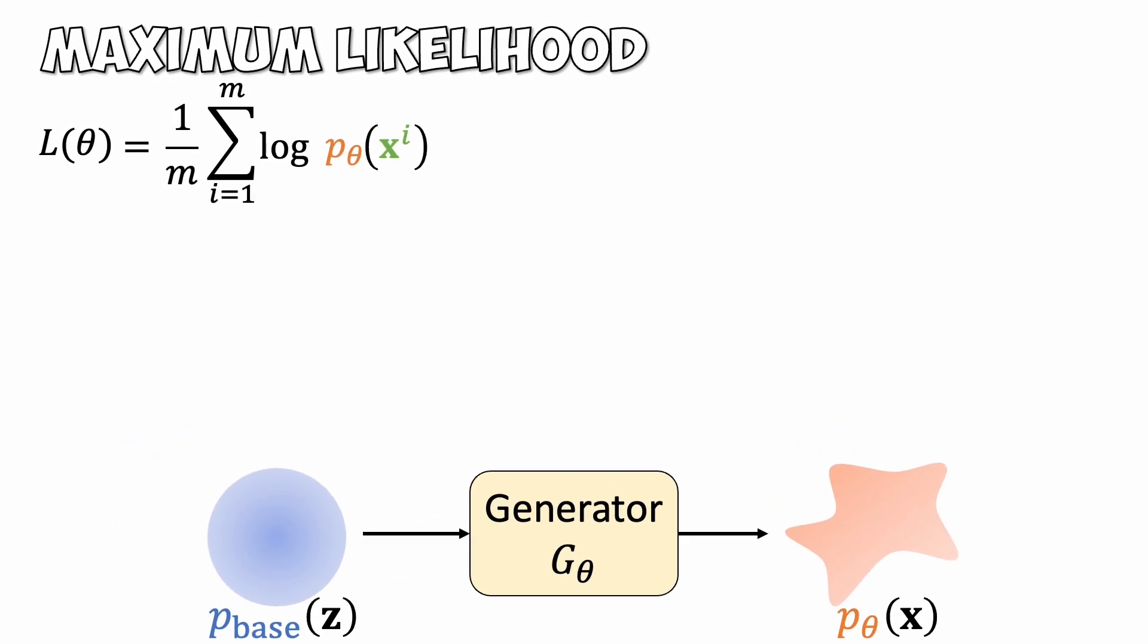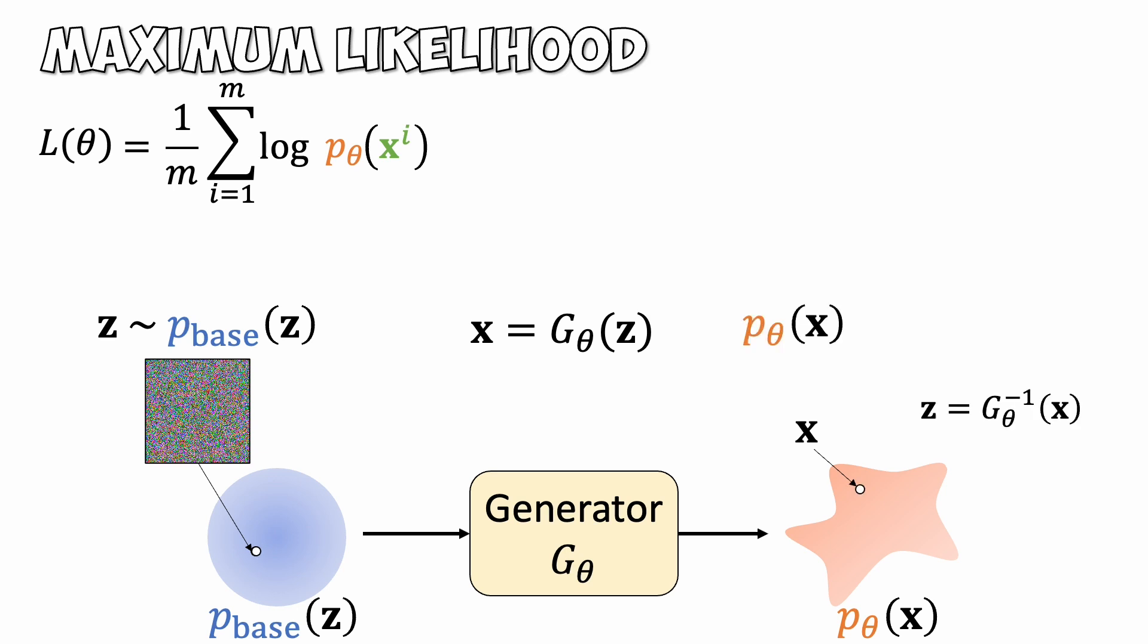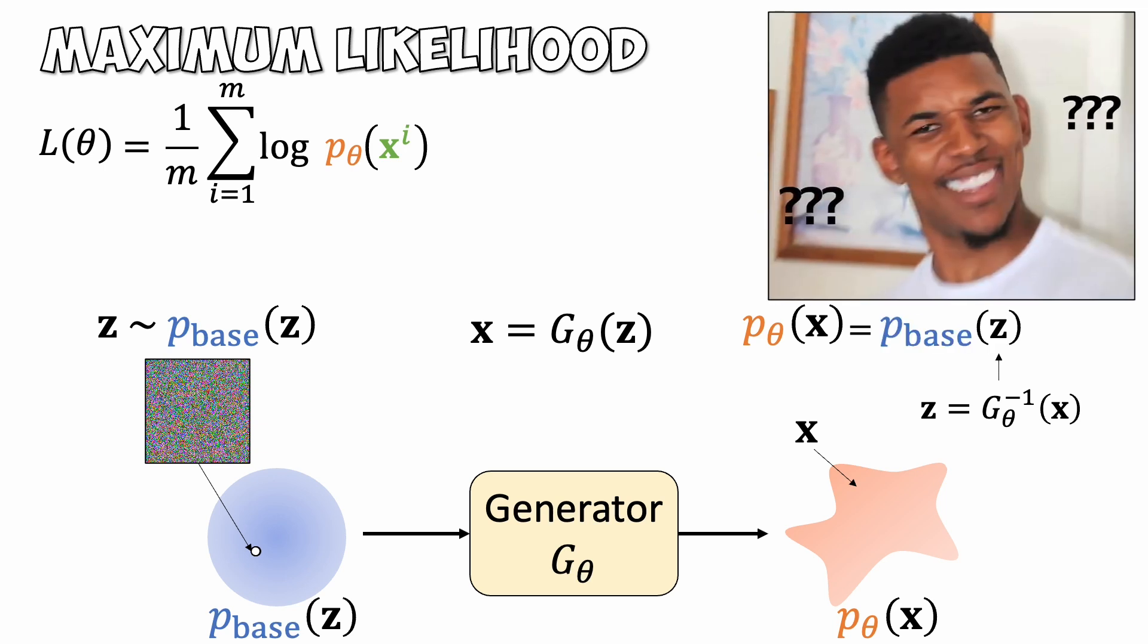So how do we get the likelihood? Here we have a sample noise z. We can transform this noise sample z into an image x. If our generator is invertible, we will know the corresponding noise z that generates this image. Can we compute a likelihood like this? Well, not quite.